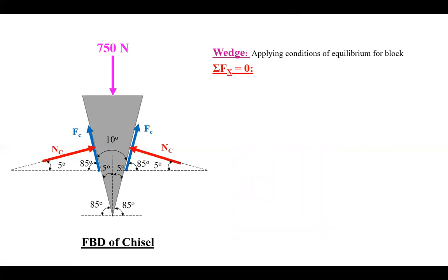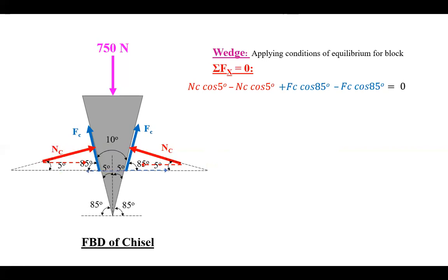Applying sigma Fx equal to zero: the horizontal component of the left-side Nc acts rightward, so positive Nc cos 5°. The right-side Nc acts leftward, so minus Nc cos 5°. The right-side Fc acts rightward, so plus Fc cos 85°. The left-side Fc acts leftward, so minus Fc cos 85°. These four forces cancel each other out, so sigma Fx equals zero is automatically satisfied.